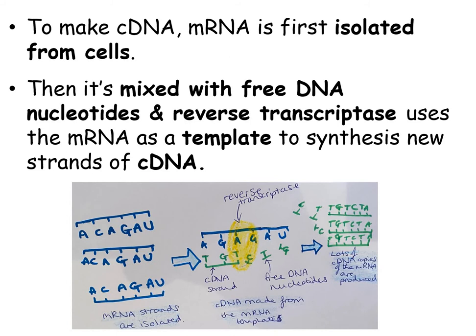To make cDNA, mRNA is first isolated from cells, then it's mixed with free DNA nucleotides and reverse transcriptase. The mRNA acts as a template, and reverse transcriptase synthesizes a new cDNA strand from the free DNA nucleotides, which line up by complementary base pairing to create complementary DNA.